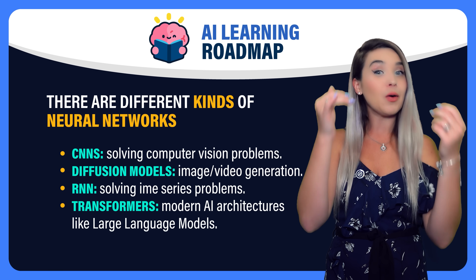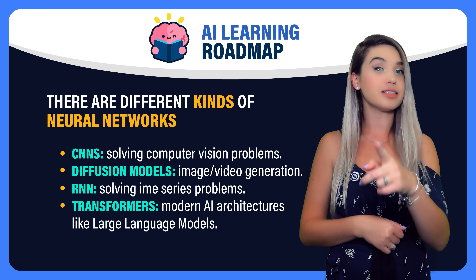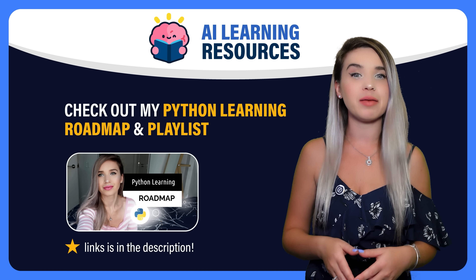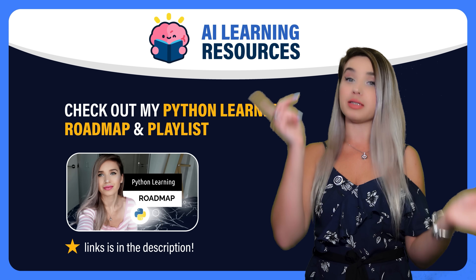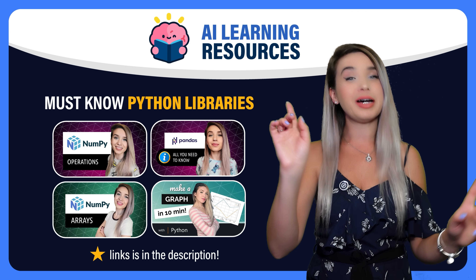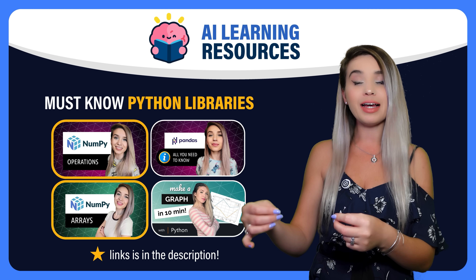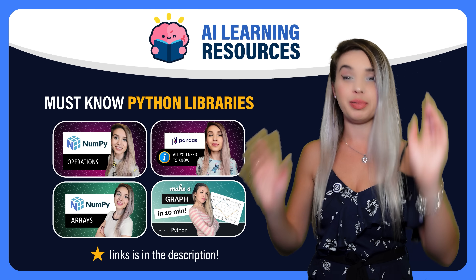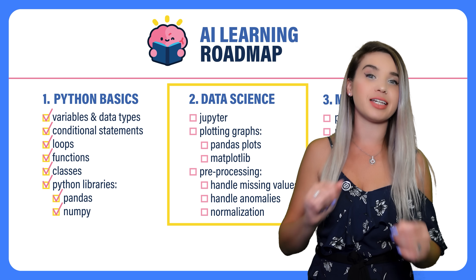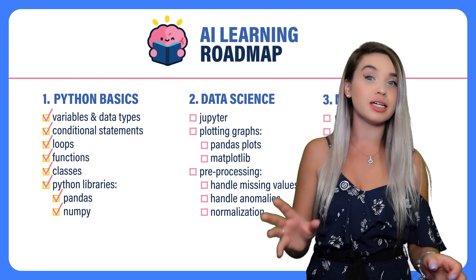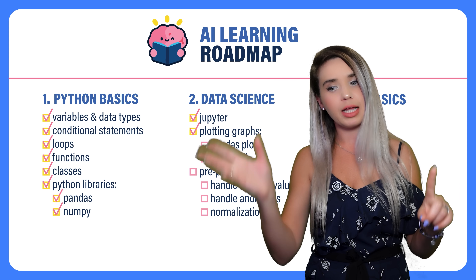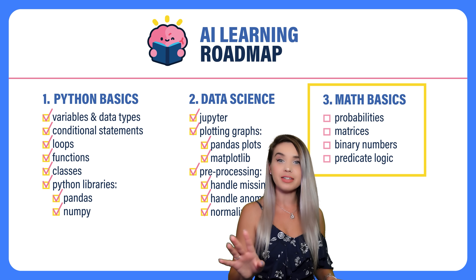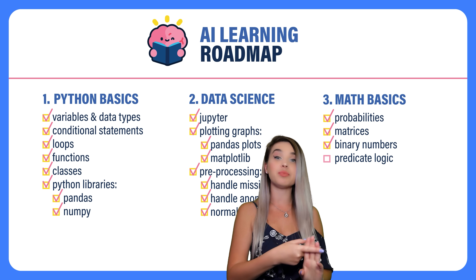Now that we've connected all the dots together, we can move on with specific steps and resources for your studies. The first thing you'll need is a basic understanding of Python — I have a Python learning roadmap and a beginner's playlist to help. The two Python libraries you'll need to absolutely master are NumPy and Pandas. Next, you'll need a deeper dive into data science beyond NumPy and Pandas, including working with JupyterLab, plotting graphs with Matplotlib or Pandas, and all kinds of pre-processing techniques. Then you'll need a solid foundation of math — specifically probabilities, matrices, binary operations, and a bit of predicate logic.